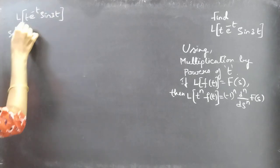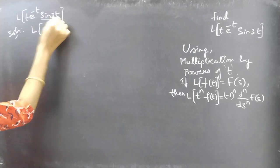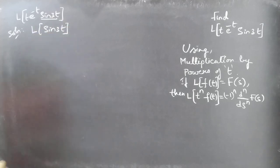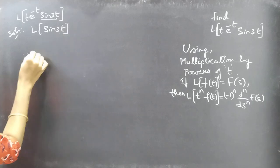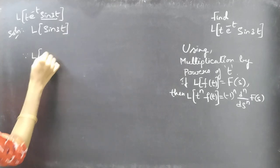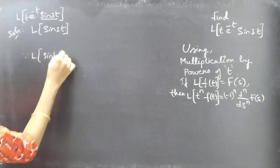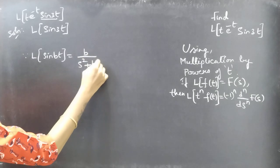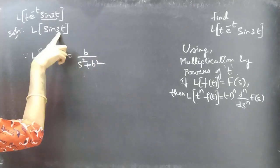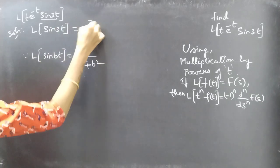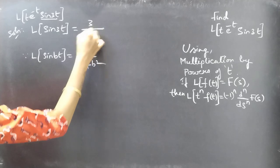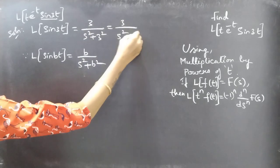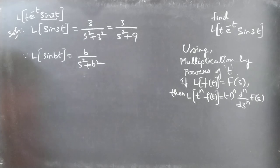We will begin with L of sin 3t. Since we know that L of sin bt equals b by s square plus b square, then for b equal to 3, we will get 3 by s square plus 3 square, which is 3 by s square plus 9.